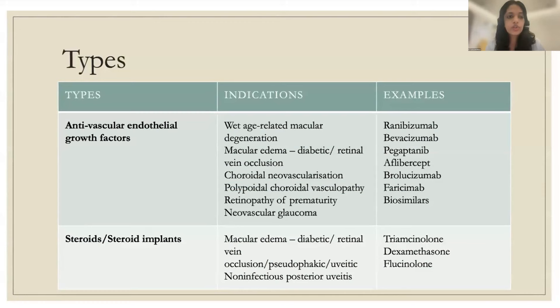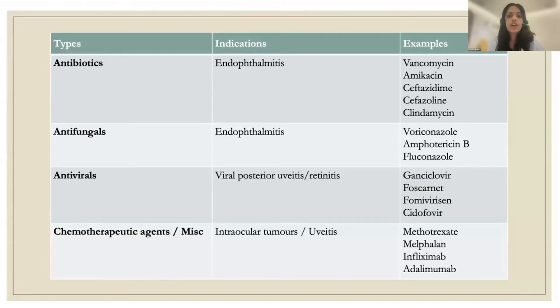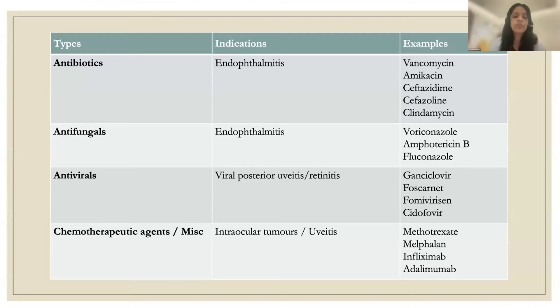The most commonly used agents are anti-vascular endothelial growth factors (anti-VEGFs), including ranibizumab, bevacizumab, pegaptanib, aflibercept, and newer ones such as brolucizumab and faricimab, plus biosimilars. We also use steroids: triamcinolone, dexamethasone, and fluocinolone. Antibiotics for endophthalmitis include vancomycin and amikacin. Antifungals include voriconazole, amphotericin B, and fluconazole. Antivirals such as ganciclovir and foscarnet are used for viral posterior uveitis and retinitis. Chemotherapeutic and miscellaneous agents include methotrexate, melphalan, infliximab, and adalimumab for non-infectious uveitis.